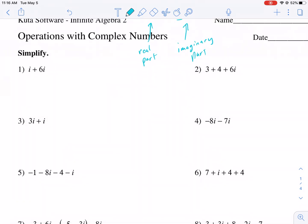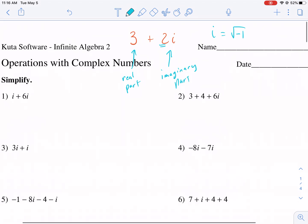So operations with complex numbers, essentially we treat it like variables. If we had 3 + 2x - x + 4, we wouldn't be able to add the 3 and the 2x, but we could do the 2x minus x.